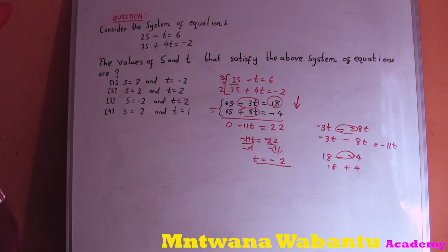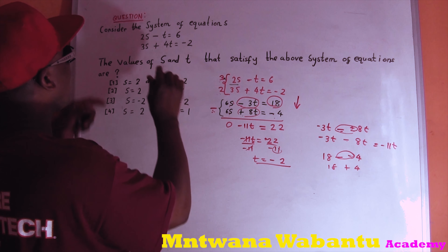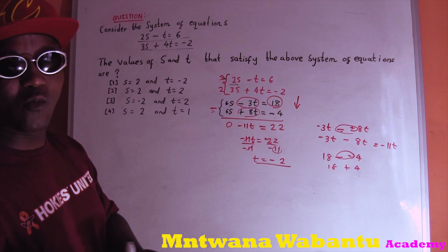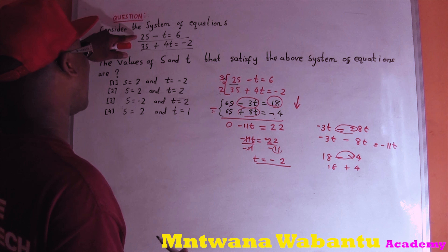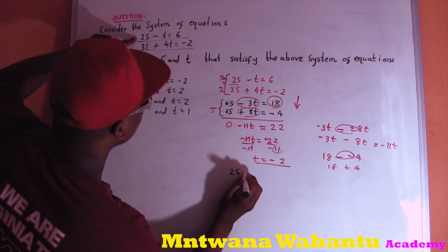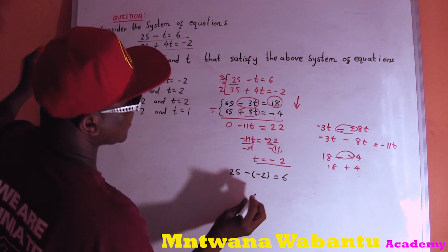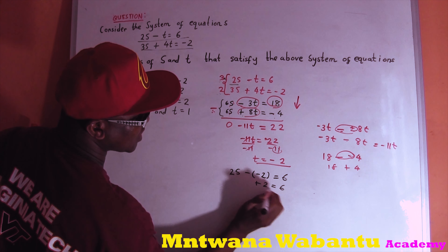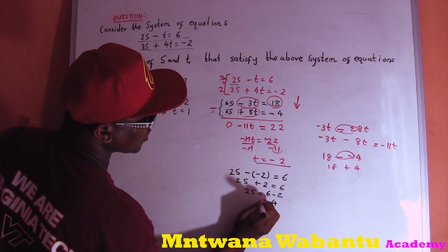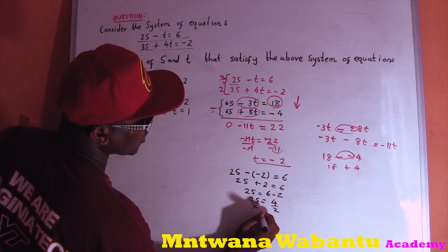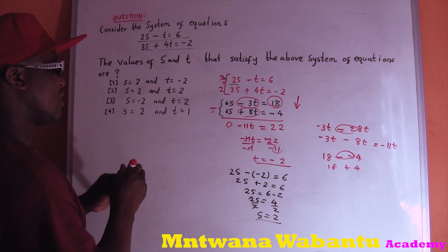Negative divided by negative gives positive. 22 divided by 11 is 2, so t equals negative 2. Now take that value and substitute it back. Using the first equation: 2s minus (negative 2) equals 6. That gives 2s plus 2 equals 6, so 2s equals 4, and s equals 2.